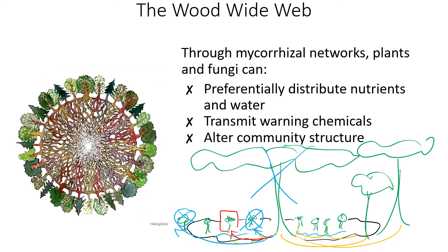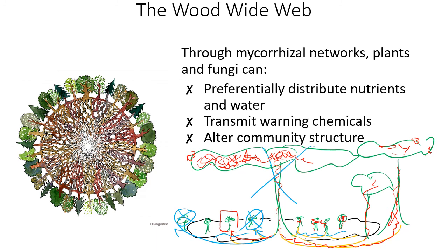There's also the ability to transmit warning chemicals. If an insect munches on one tree, that tree starts producing immune compounds like salicylic acid in response to herbivory or infection — but this takes time to move through the plant body. Those signals get sent through the mycorrhizal network, triggering other connected trees to also produce immune compounds before they're affected, so they're already prepared and producing deterrents if an insect attacks them. Through all of this, the network can also alter community structure, mostly by preferential distribution of nutrients and deciding which trees establish where.